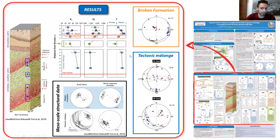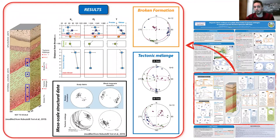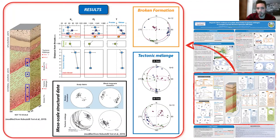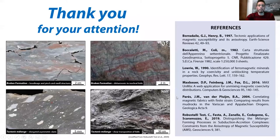a layer-parallel shortening fabric shows up, suggesting highly localized strain and intense shearing only close to the main thrust folds.